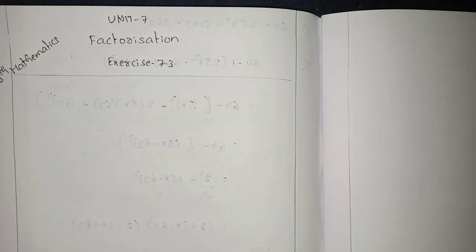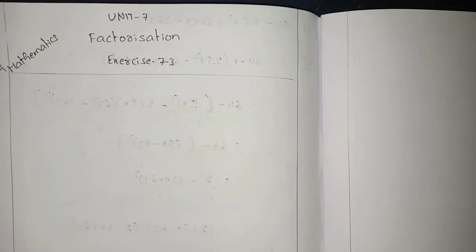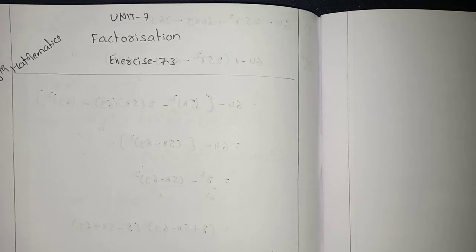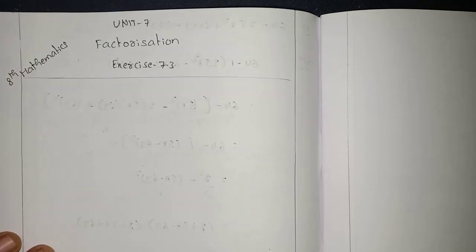Hi students, now you are watching 8th class mathematics, 7th unit, Exercise 7.3. The Exercise 7.3 is dealing with the factorization of trinomial expressions by splitting the middle terms.